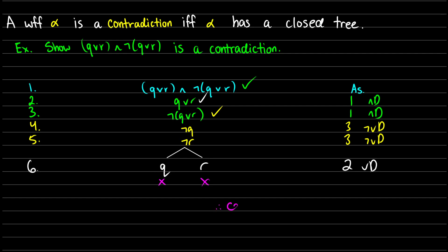Therefore, we know that this is a contradiction because there's no way we can make this tree true.